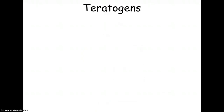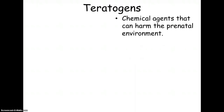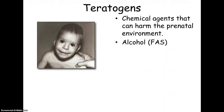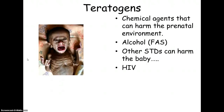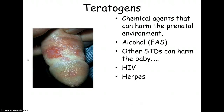Now moving on to complications. Teratogens are chemical agents that can harm the prenatal environment. There's an example here of a child with fetal alcohol syndrome — you notice the lips are slightly different and the shape of the head is slightly abnormal. Some STDs can also harm the baby, including HIV and herpes.